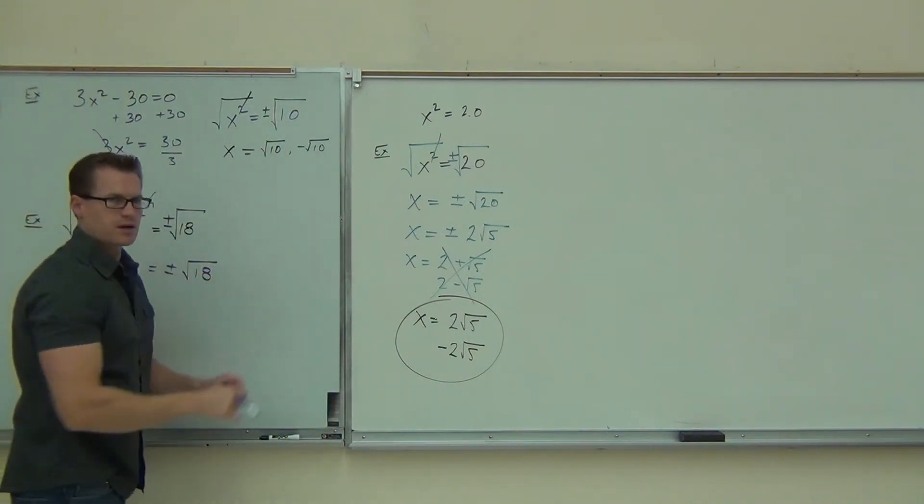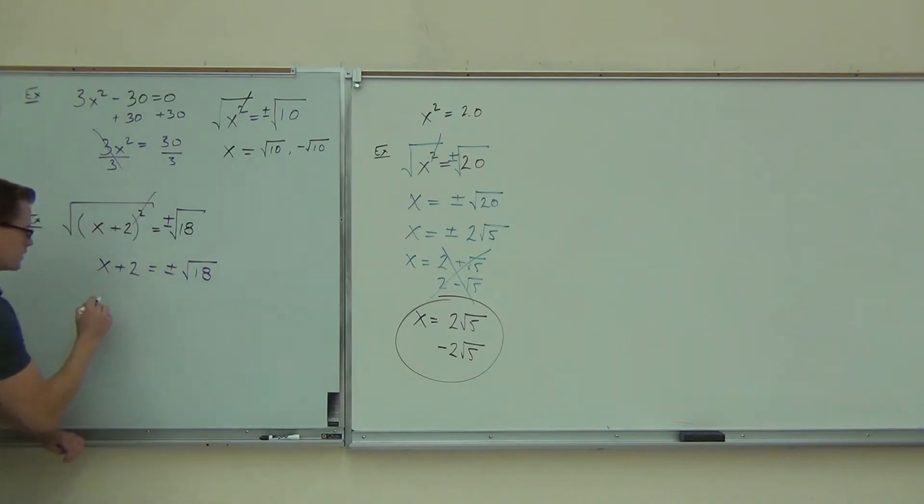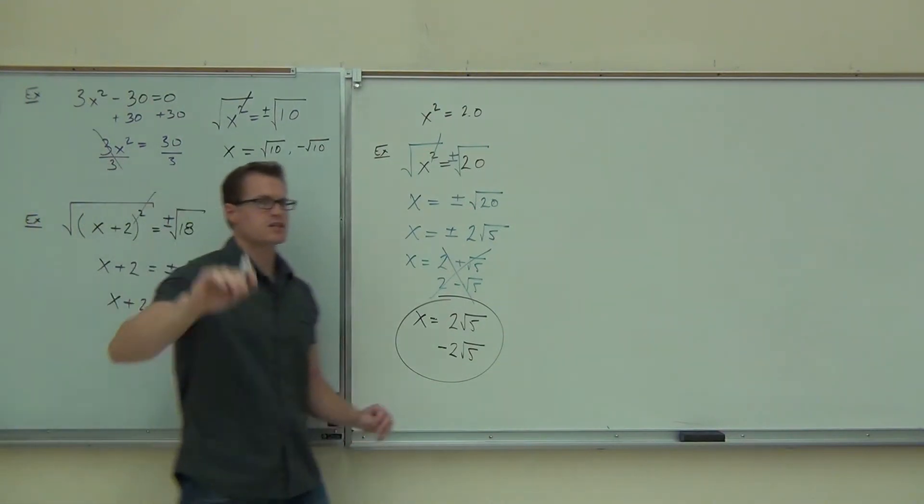Can you simplify this side like we did over there? In fact, we already had the square root of 18 today. That's 3 root 2. So we get x plus 2 equals plus or minus 3 root 2. By a show of hands, how do we feel okay getting that far?